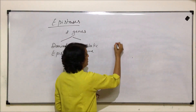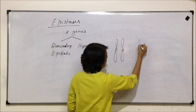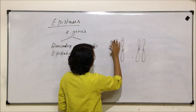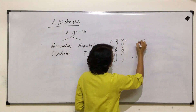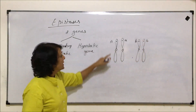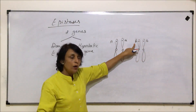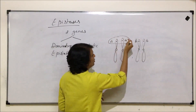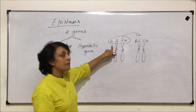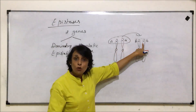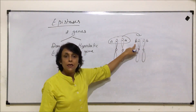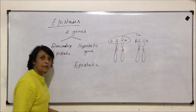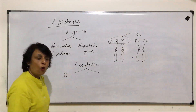If we draw these chromosomes to understand it better, we are drawing two homologous pairs. Here is a gene - one is dominant, the other is recessive - and here is also a gene - one is dominant, one is recessive. This gene and this gene are located on two different chromosomes or at different loci on the same chromosome. We are saying this gene dominates over this gene, so the one which dominates is known as the epistatic gene and the one which gets dominated is the hypostatic gene.